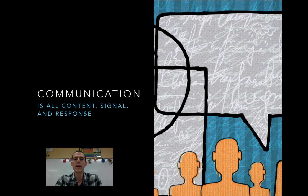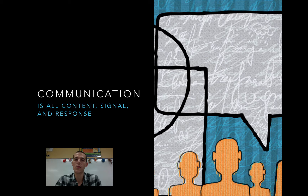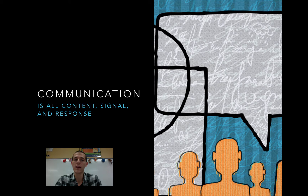One of the things we are going to keep coming back to in this unit — which will take us most of the third quarter — is the idea of communication. In good communication, you must have content, you must have a signal, and you must have a response. The first part of Big Idea Number Three is going to be all about content in the form of DNA. The next part is going to be about signal, covering cell signaling and related topics. And the last part is going to be about how organisms respond to those signals.